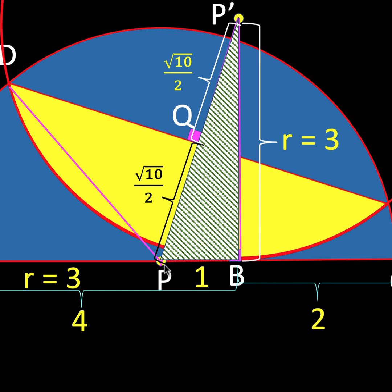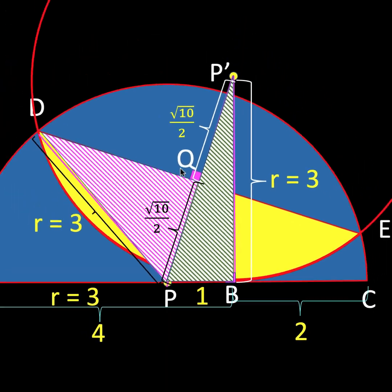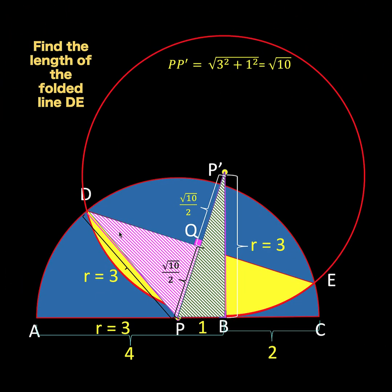Then let's connect point P to point D. Since P is the center of the blue semicircle, PD is a radius of the semicircle and its measure must equal three units. So we know the hypotenuse and one leg, and we can compute the length of leg DQ. The reason we are solving for DQ is that DQ and EQ are congruent — line segment PP prime is the perpendicular bisector of DE. So if we find DQ, we can double it to find the measure of segment DE.